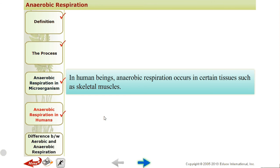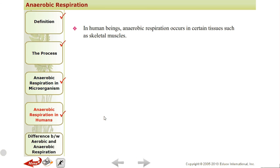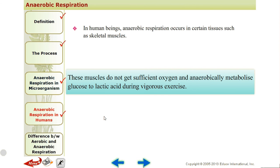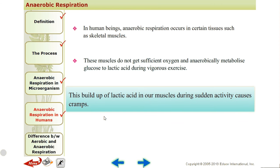In anaerobic respiration in humans, there are some muscle tissues that respire anaerobically. When these muscles do not get sufficient oxygen — like during regular exercise or running — the muscles and legs do not get proper oxygen. So the food is not properly broken down. Without proper oxygen, lactic acid is formed instead. This is known as lactic acid formation or anaerobic respiration in humans. The buildup of lactic acid in our muscles during sudden activity causes cramps.